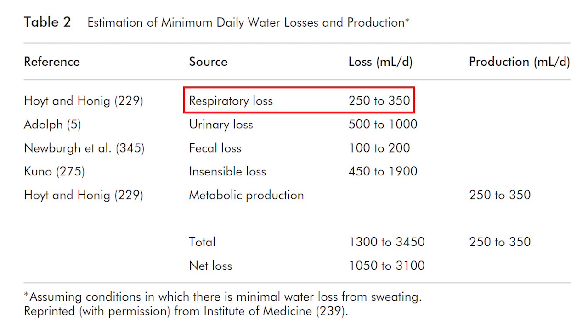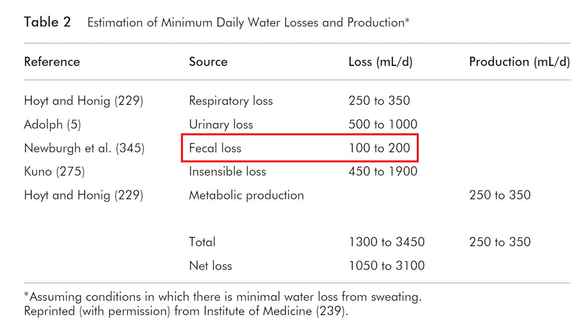Table 2 shows a breakdown of where your water goes, assuming a day with minimal loss from sweating. You lose a little more than a quarter of a liter a day in the moisture from your breath, from half to a liter of water in urine and some in your feces.